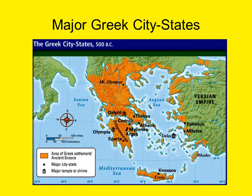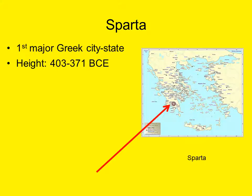This map shows you the location of the major Greek city-states in the Peloponnesian Peninsula and throughout the Aegean Sea and eastern Mediterranean. We'll next take a look at some of the major city-states individually.